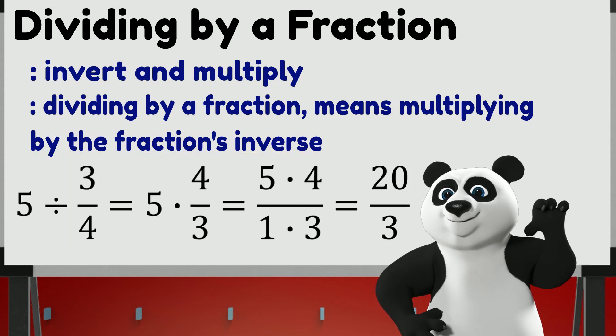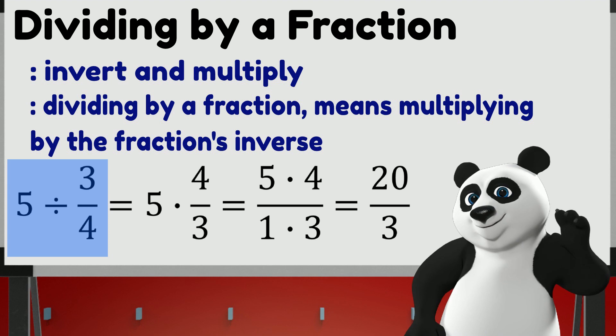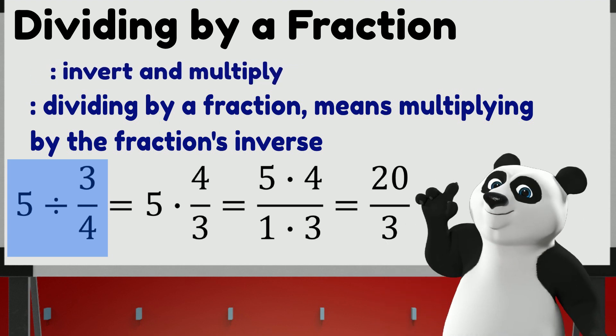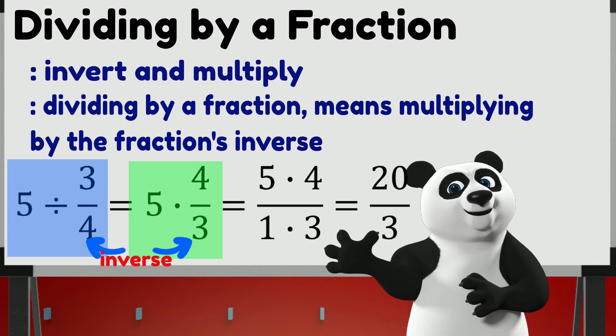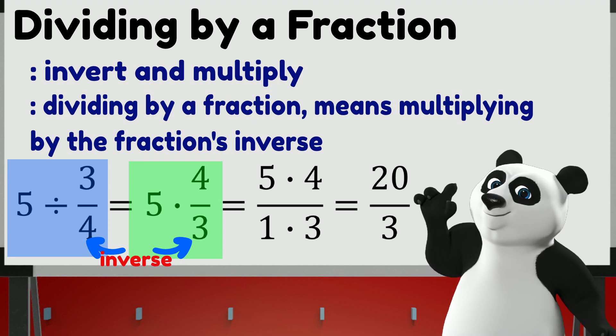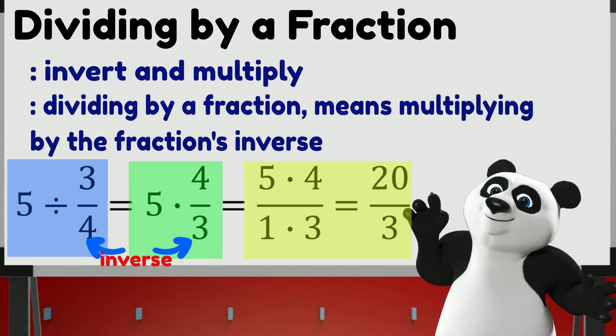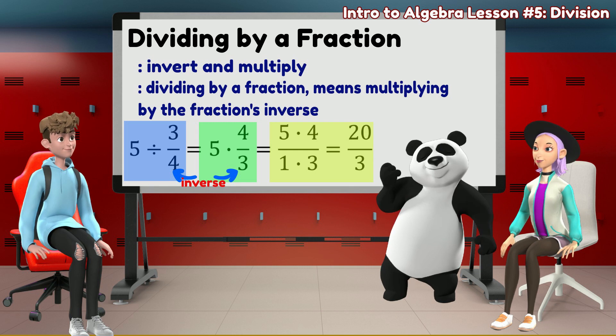Here is another example: 5 divided by 3 quarters. Applying the rule again, we multiply 5 by the inverse of 3 quarters, which is 4 thirds. So 5 times 4 thirds gives us 20 thirds. You got it, right?